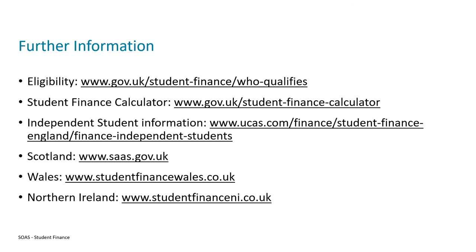As mentioned throughout the presentation, there are some links available which you might find helpful — you may want to pause the video to check some of these out. These include information about eligibility criteria, the student finance calculator, information about independent student status, and the respective links for Scotland, Wales and Northern Ireland student finance bodies. Thank you for watching this video. If you have any questions or inquiries you can find us at study@soas.ac.uk. Thanks.